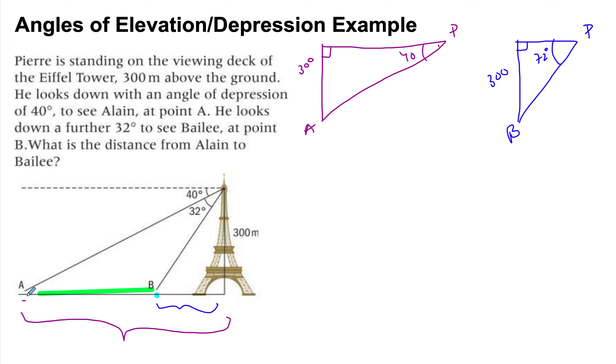So then subtracting from each other, we get the green length, which is A to B. Hopefully it's clear by now.